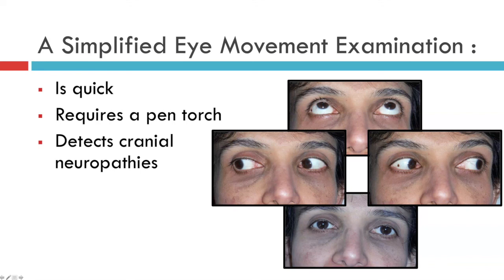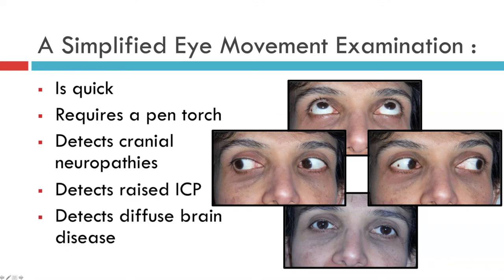A simplified eye movement examination is very quick, and provided you use a pen torch, can also be quite accurate. You can detect cranial neuropathies this way, you can detect raised intracranial pressure, and you can detect diffuse brain disease. Thank you very much for your attention.